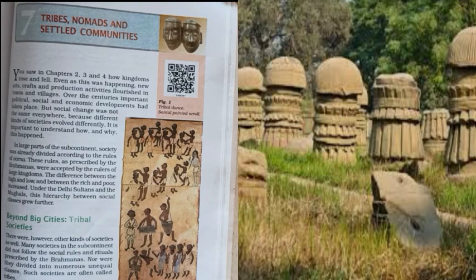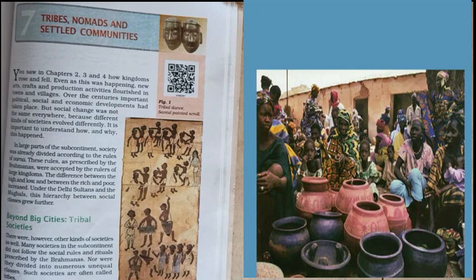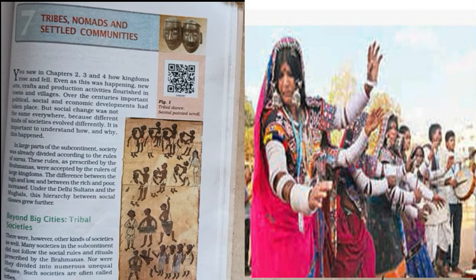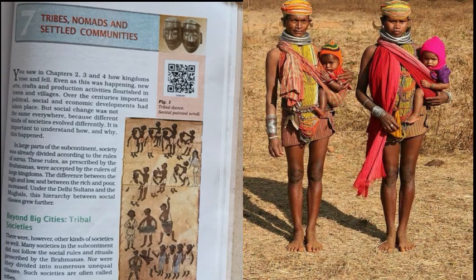Children, you saw in chapters two, three and four how kingdoms rose and fell. Even as this was happening, new arts, crafts and production activities flourished in towns and villages. Over the centuries, important political, social and economic developments had taken place, but social change was not the same everywhere because different kinds of societies evolved differently.